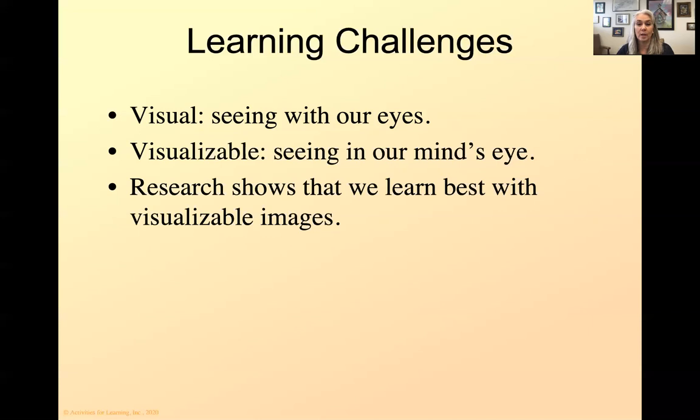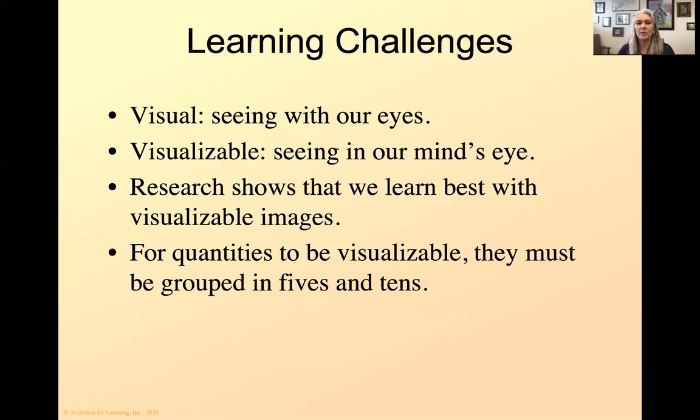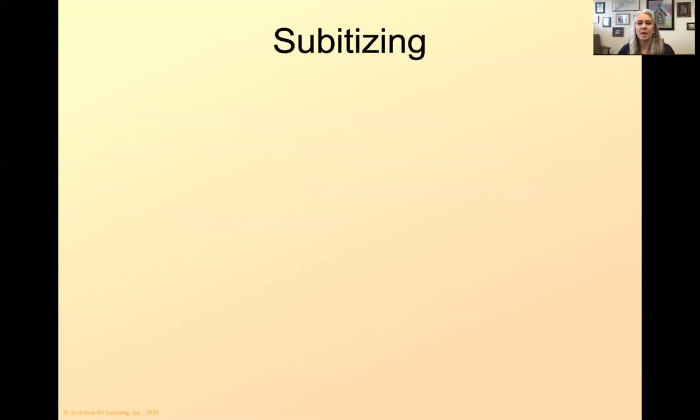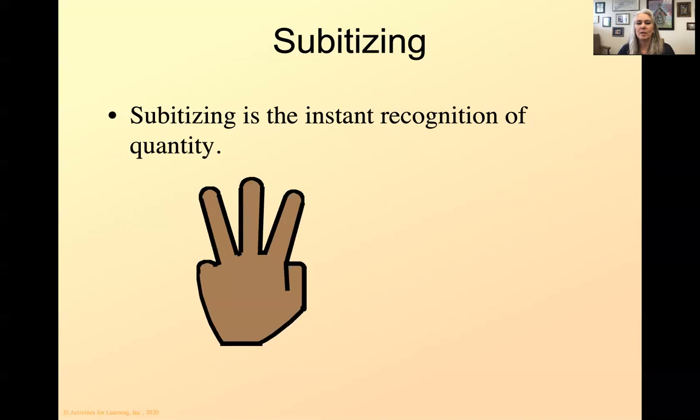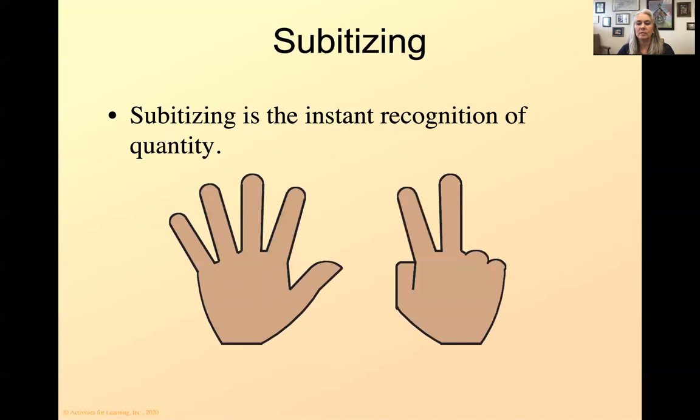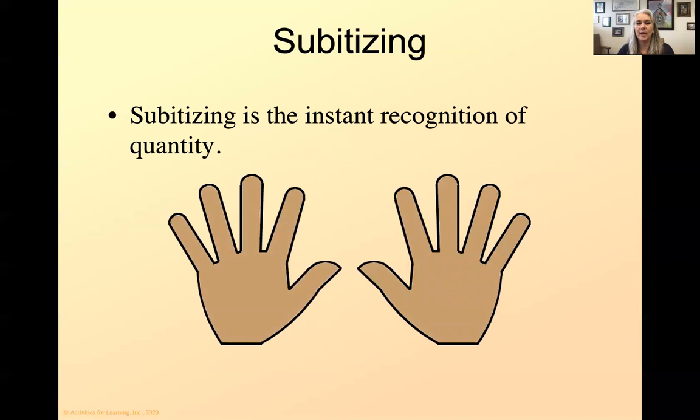For quantities to be visualizable, they must be grouped in fives and tens, just like our hands. This is actually called subitizing. Subitizing has been around forever, but the researchers have been talking about it for about maybe the last 20 years. It's the instant recognition of a quantity. So if I put this up, how many is there? It's two. Nobody had to count it. You can see it. That's subitizing. This would be three, five, seven, and ten. That's subitizing.